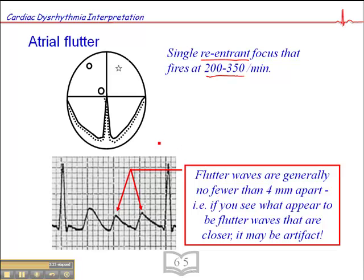You'll hear some people talk about patients who are in fib flutter — sometimes in atrial fibrillation, sometimes in atrial flutter. Quite frankly, I haven't seen fib flutter a whole lot; it does happen but not all that frequently. More often what's actually happening is the patient is not in afib flutter — they're in afib and they just have lots of artifact.